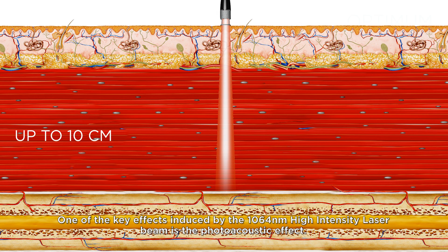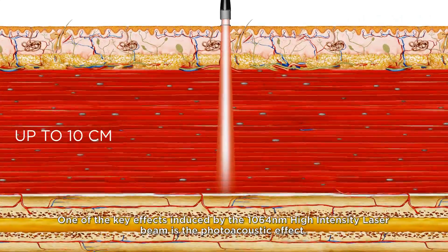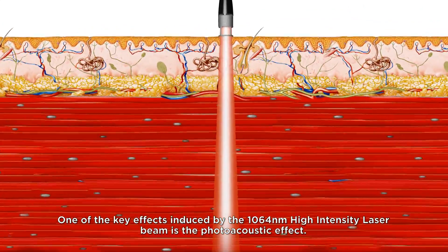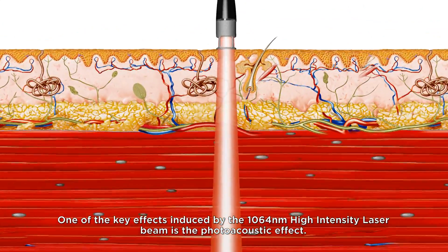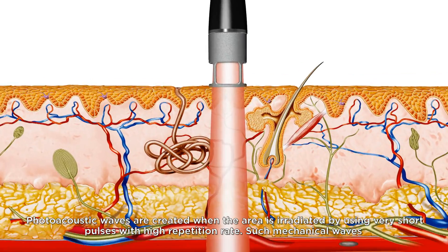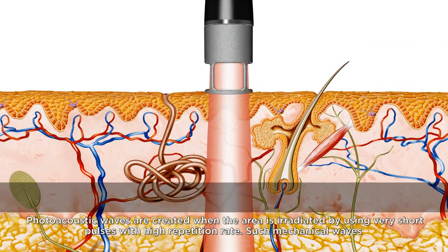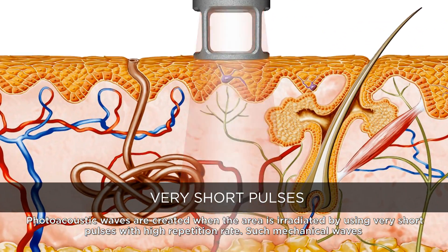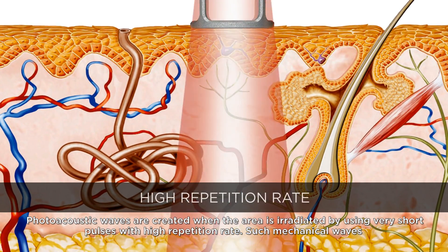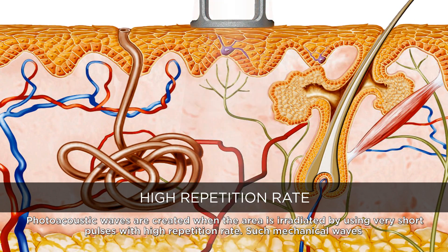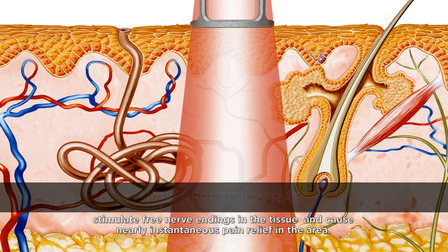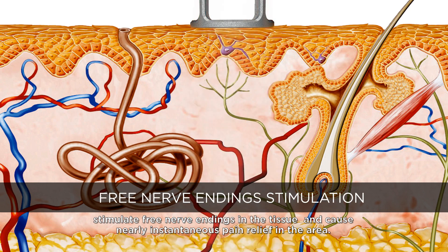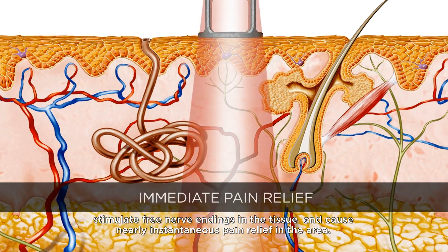One of the key effects induced by the 1064 nanometer high-intensity laser beam is the photoacoustic effect. Photoacoustic waves are created when the area is irradiated using very short pulses with a high repetition rate. Such mechanical waves stimulate free nerve endings in the tissue and cause nearly instantaneous pain relief in the area.